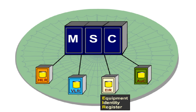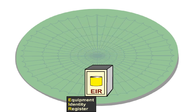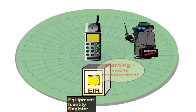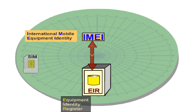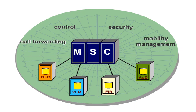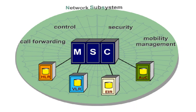The Equipment Identity Register, EIR, can be implemented as an option by the network operator. The EIR permits the detection of stolen terminal equipment used in GSM networks by checking the IMEI, International Mobile Equipment Identity, against the data stored in the EIR. This check is carried out independently of the SIM card and only applies to the mobile station in question. All the components which control and forward the call and are responsible for security and mobility management — that is, the MSC, HLR, VLR, AUC, and EIR — form the network subsystem, NSS.